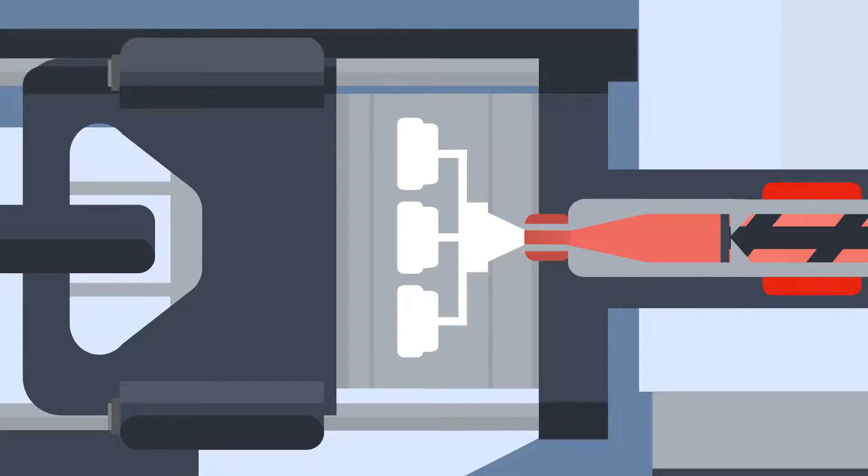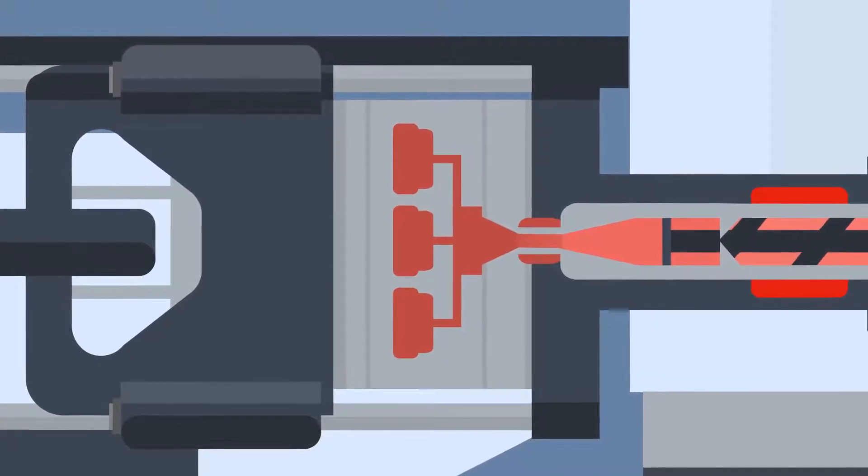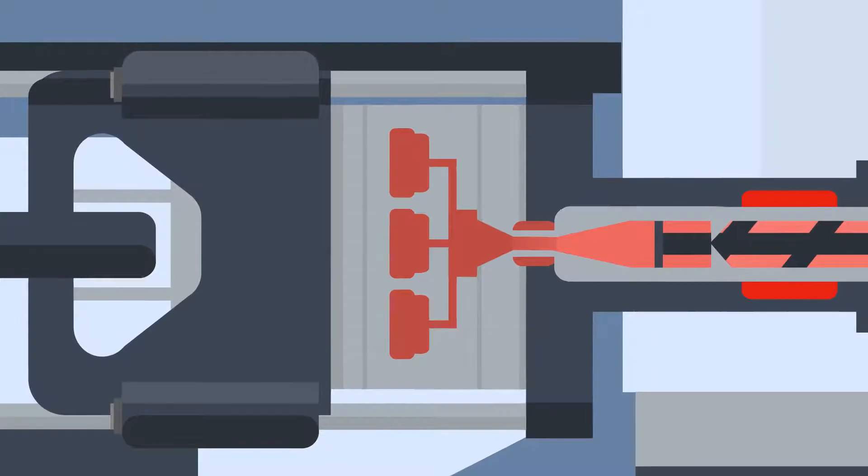Once the clamp pressure is at an optimum level, the plastic is injected by a screw at high speed and pressure into the cavity. A gate inside the tool helps to control the flow of the plastic.